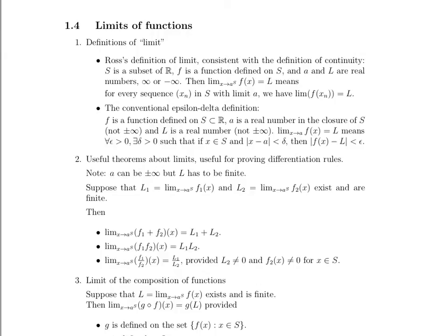First of all, we need to talk about the definition of limit. Ross's definition of limit that he uses in our textbook is consistent with the definition he chooses to use for continuity. He considers some subset S of the reals, F is a function that's defined on this subset, and A and L are real numbers, positive infinity or negative infinity. And so when he says that the limit as X approaches A within the subset S, that's what this notation means, that X is approaching A inside the subset S.